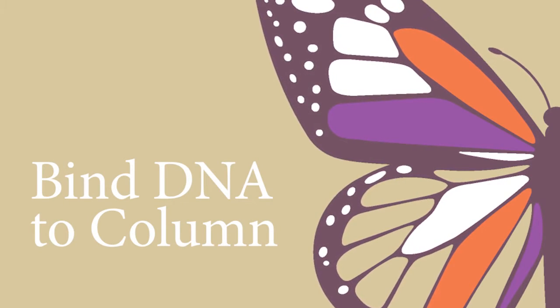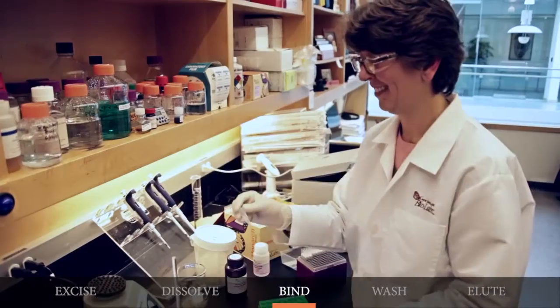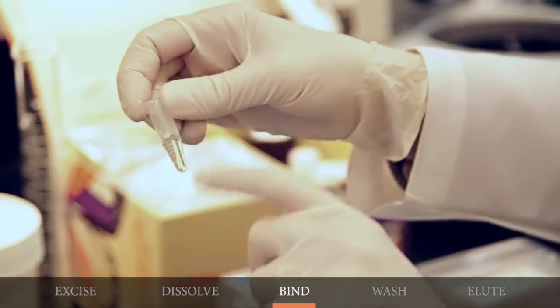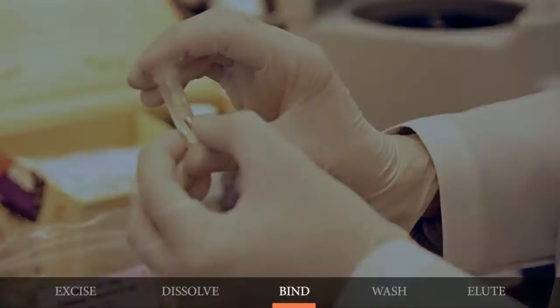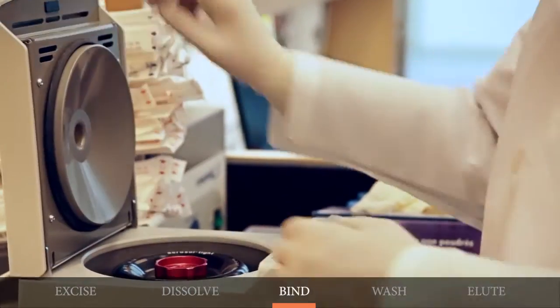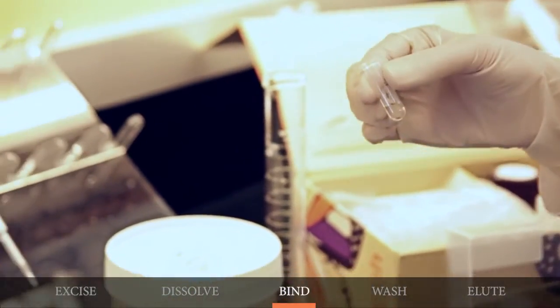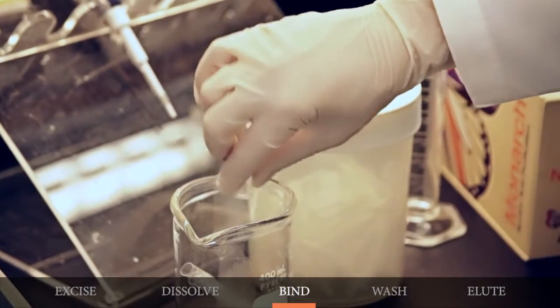Next, bind the DNA. Once the gel slice has dissolved, load the sample onto the column and close the cap. Centrifuge the sample for one minute and discard the flow through. The DNA is now bound to the column's matrix.